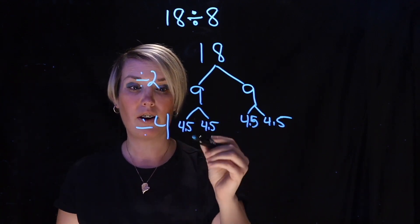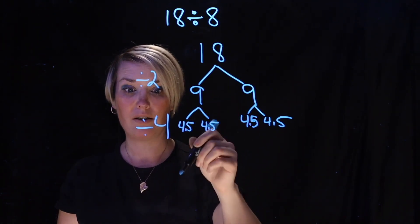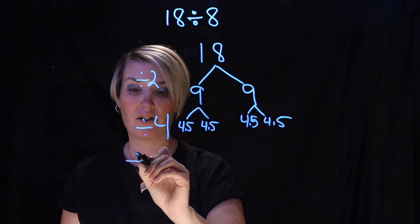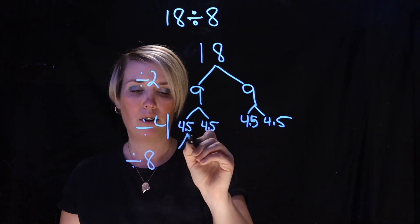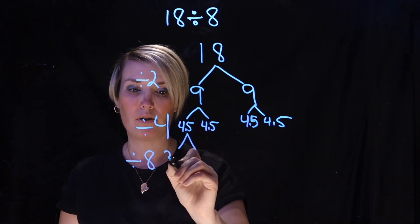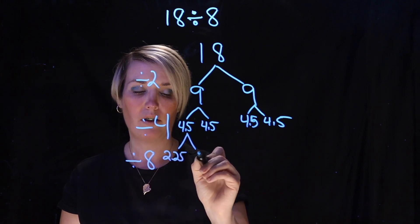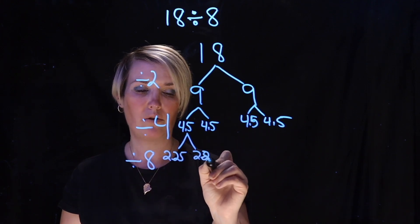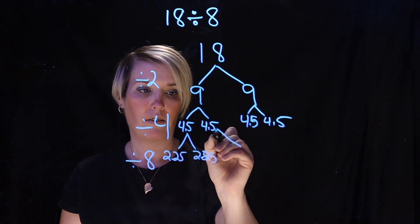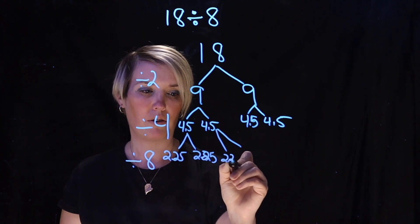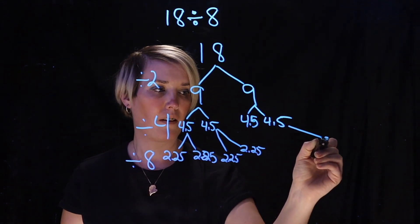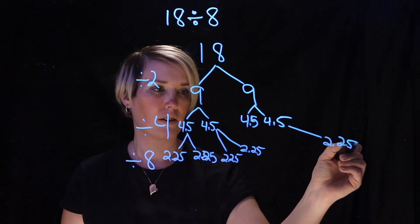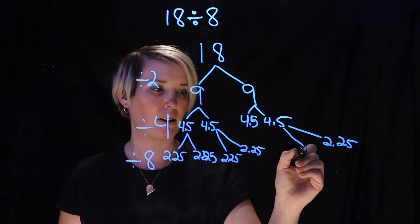And then she said well if I divide 4.5 again divided by 2 then she's going to get 8 full groups or she's divided by 8. So 4.5 divided by 2 would be 2.25. She writes 2.25 for each of the groups.